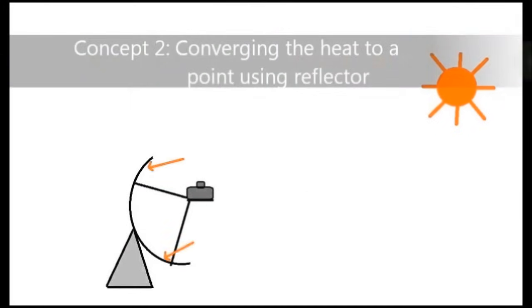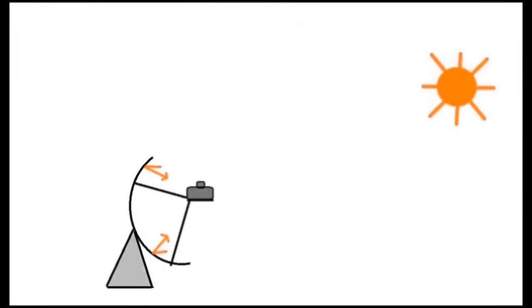In a parabolic type, the heat gets converted to a single point where the cooking utensils are kept. It gets heated up and cooks the food.